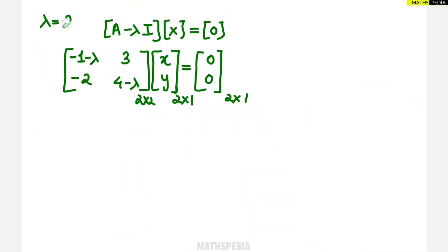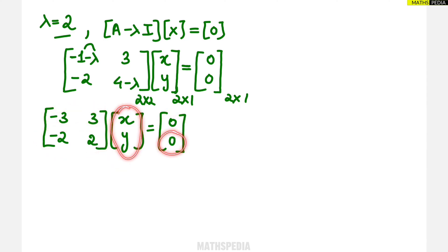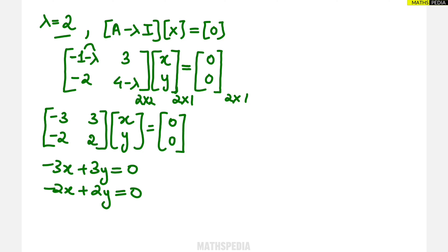For the second eigenvalue lambda equals 2, the same procedure is followed. The matrix A minus 2I becomes: minus 1 minus 2 is minus 3, 3 stays as 3, minus 2 stays as minus 2, and 4 minus 2 is 2. So the matrix is [-3, 3; -2, 2], multiplied by [x; y] equals [0; 0]. We get two equations: minus 3x plus 3y equals 0, and minus 2x plus 2y equals 0.